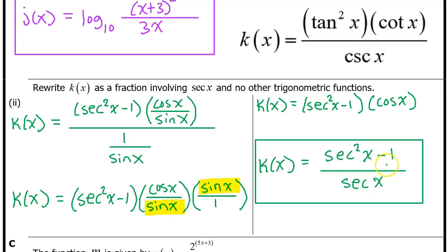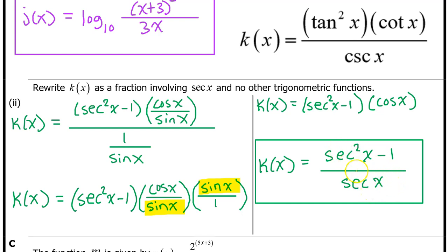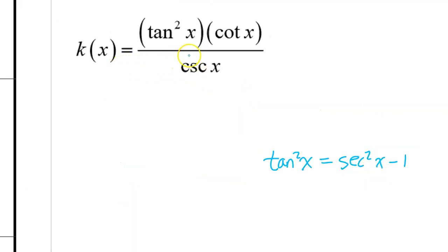Be very careful: some students get this far and then lose the point anyway, because they think they can cancel out one of the secant x's from the numerator with the secant x in the denominator. You cannot, because these are connected by subtraction. You can never cancel out things that are connected by addition or subtraction. So this is the final answer — nothing cancels.